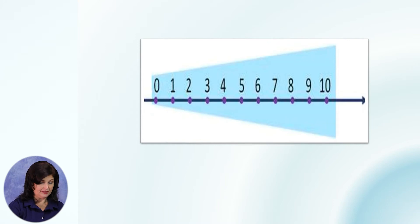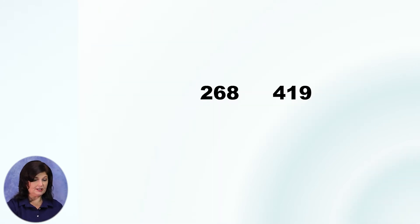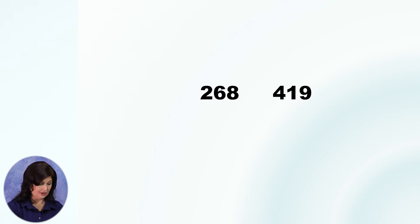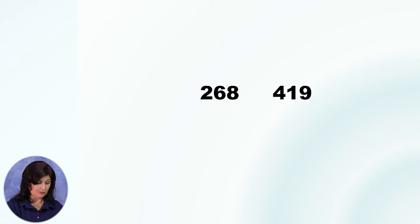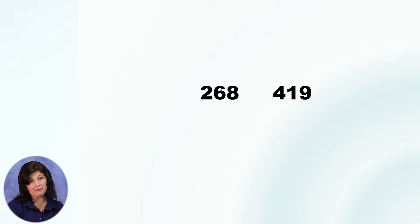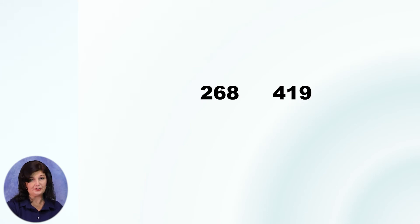А теперь сравним числа 268 и 419. Они оба трёхзначные, и на луче они не стоят рядом. Поэтому сравнивать их по месту нахождения на числовом луче и по количеству цифр мы не можем. Сравнивать их будем поразрядно. Начинаем сравнение с высшего разряда. В этих двух числах такой разряд — сотни. Две сотни меньше четырёх сотен. Дальше эти числа сравнивать не надо. Большим будет то число, в котором больше единиц высшего разряда.